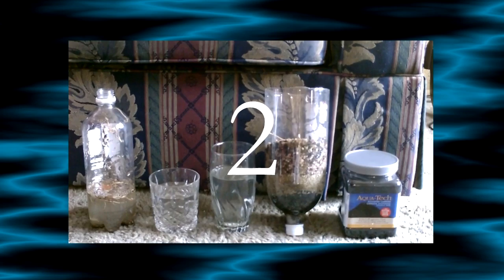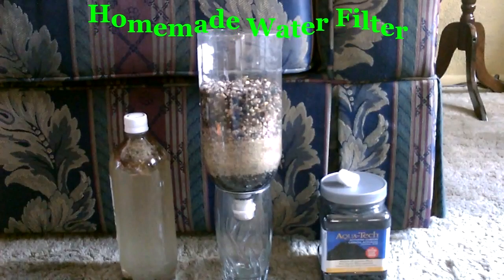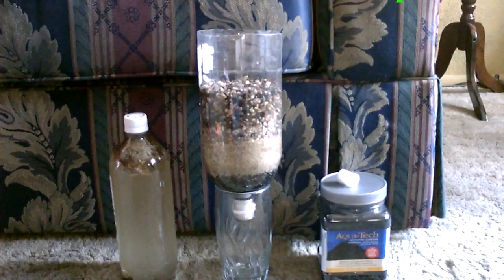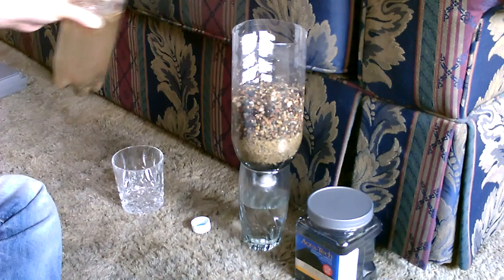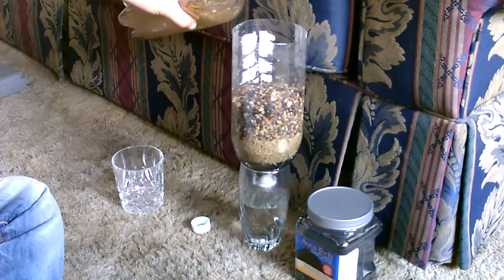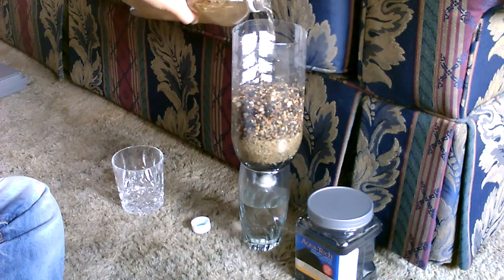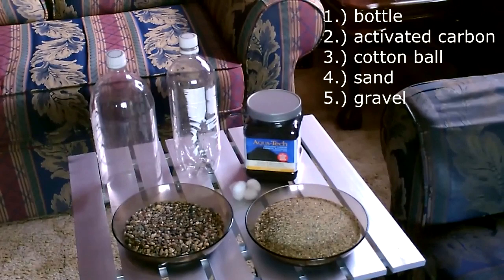Now to a three-stage two-liter bottle water filter. It's got the gravel, sand, and activated carbon. Just dump the water in. That's what you need.